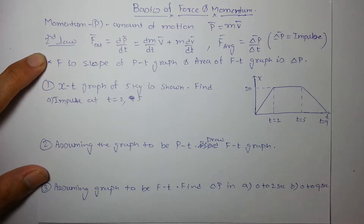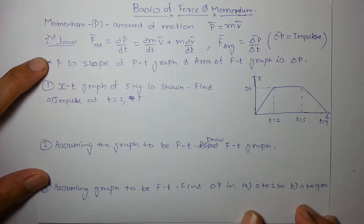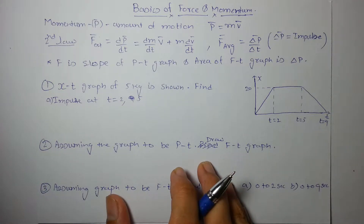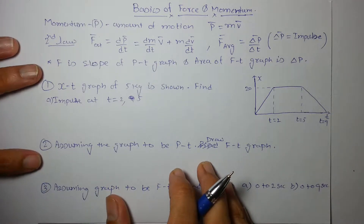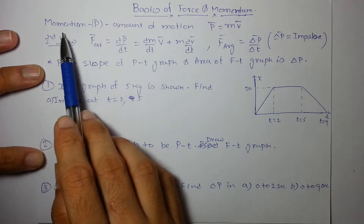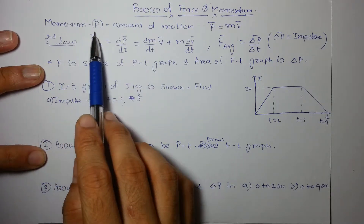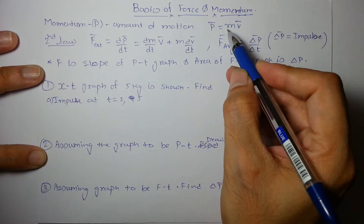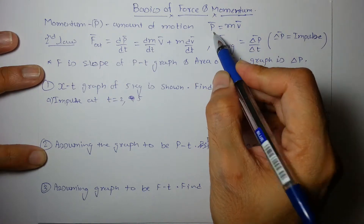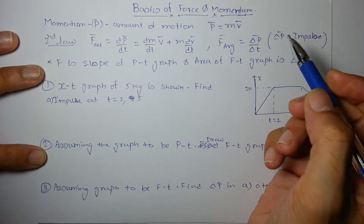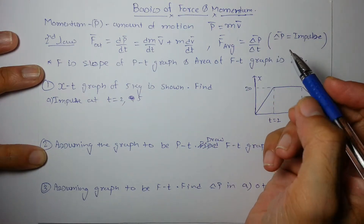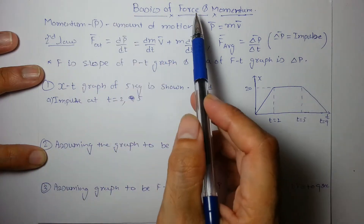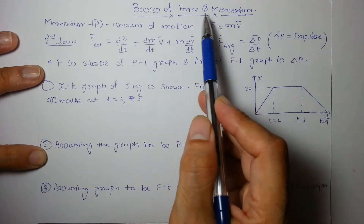Hi guys, this video will talk about basics of forces and momentum. So what is the relation between them? Momentum is basically the amount of motion, given by p = mv, where p is the symbol for momentum, m is mass, and v is the velocity of the particle.